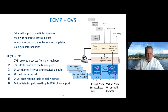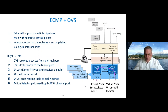To summarize ECMP with OVS: we have a table API that supports multiple pipelines, each with separate control planes, and interconnection of data planes is accomplished via logical internal ports. This demonstrates that we have two separate data planes — two P4 programs: one is an OVS P4 pipeline, as well as the kernel P4 program.